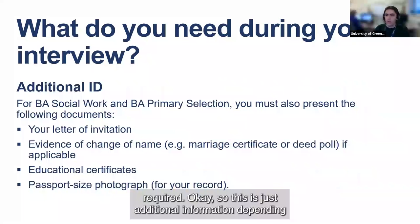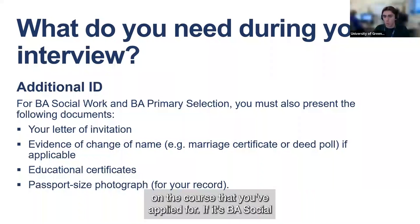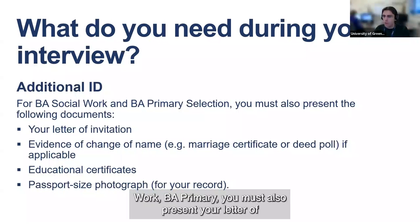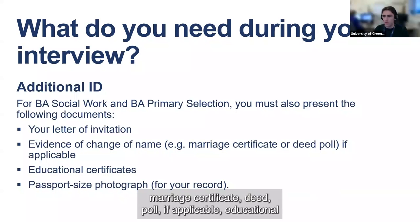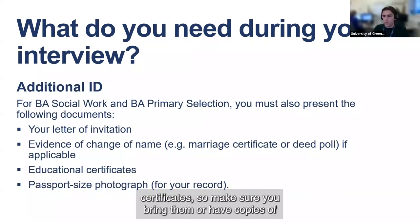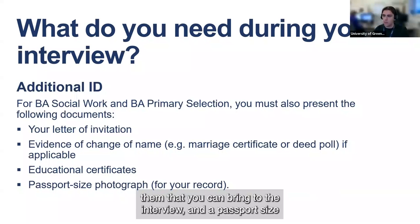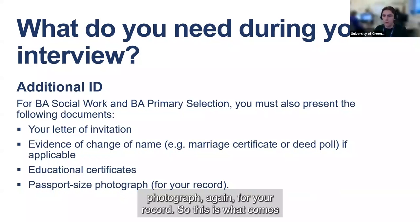This is additional information depending on the course you've applied for. If it's BA Social Work or BA Primary, you must also present your letter of invitation, evidence of a change of name such as a marriage certificate or deed poll if applicable, educational certificates — make sure you bring them or have copies — and a passport size photograph again for your record.